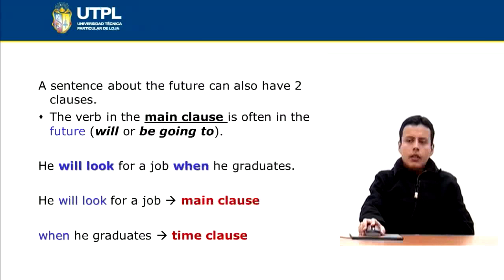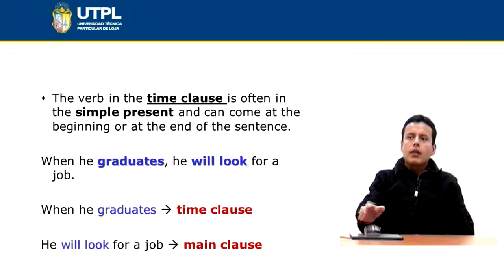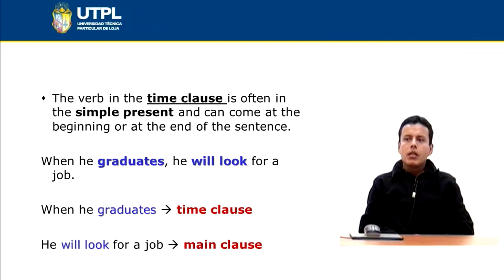In the independent clause or main clause, I am using will: 'He will look for a job.' In the second clause with 'when' — the dependent clause or time clause — I am using the simple present tense. The verb in the time clause is often in the simple present. It can come at the beginning or at the end of the sentence. You can say 'When he graduates, he will look for a job,' or 'He will look for a job when he graduates.'